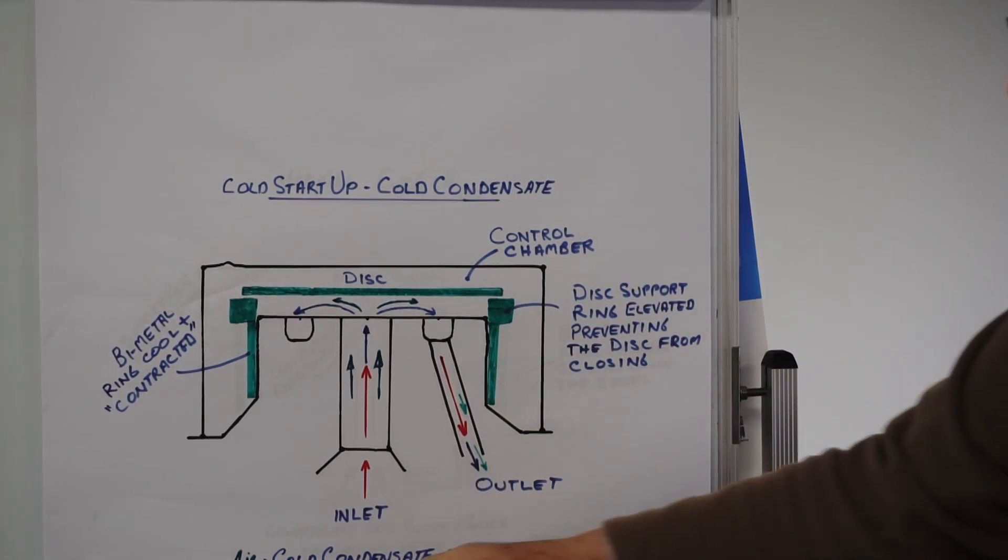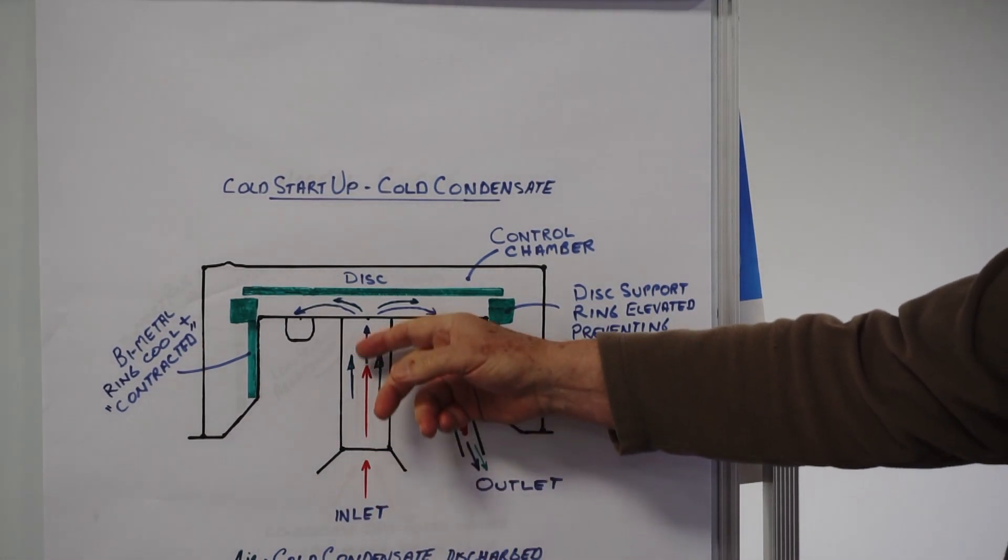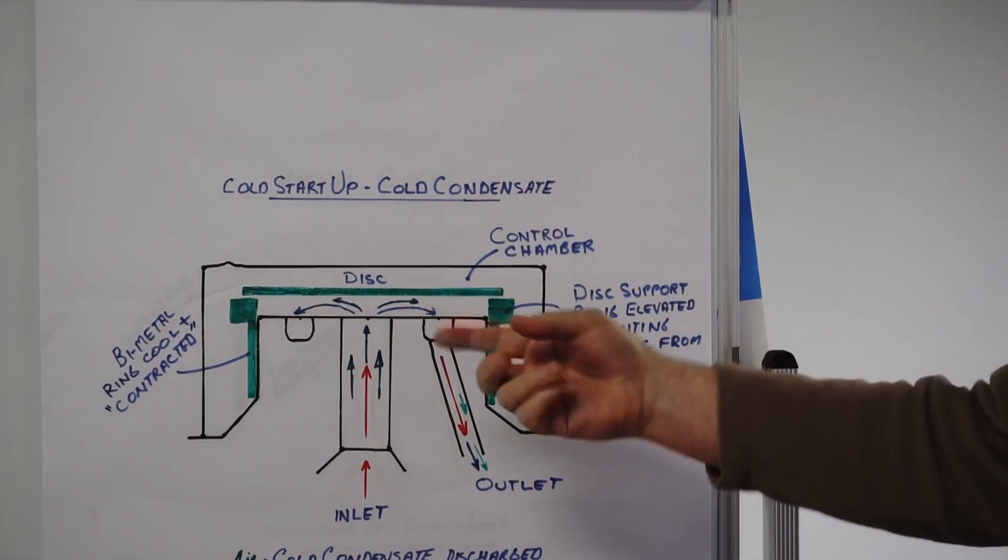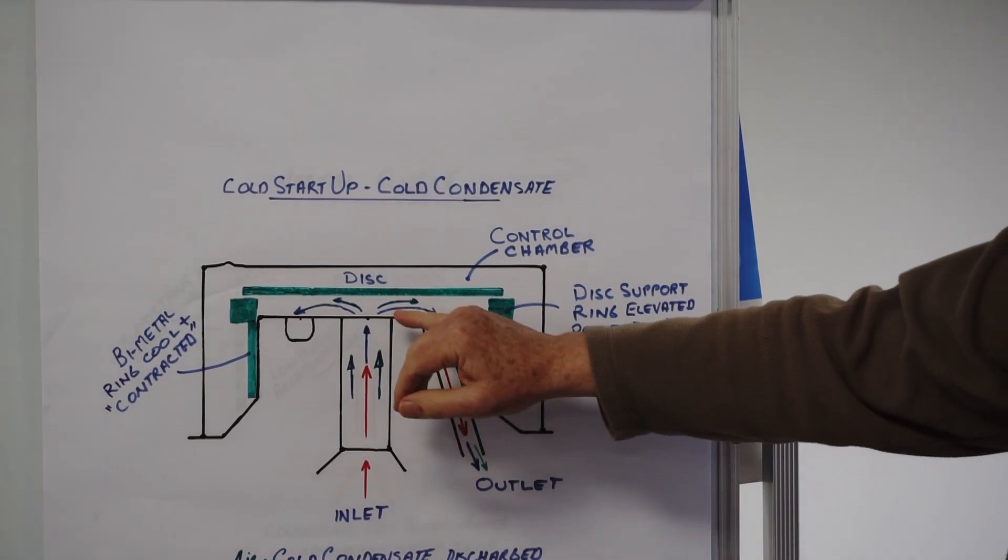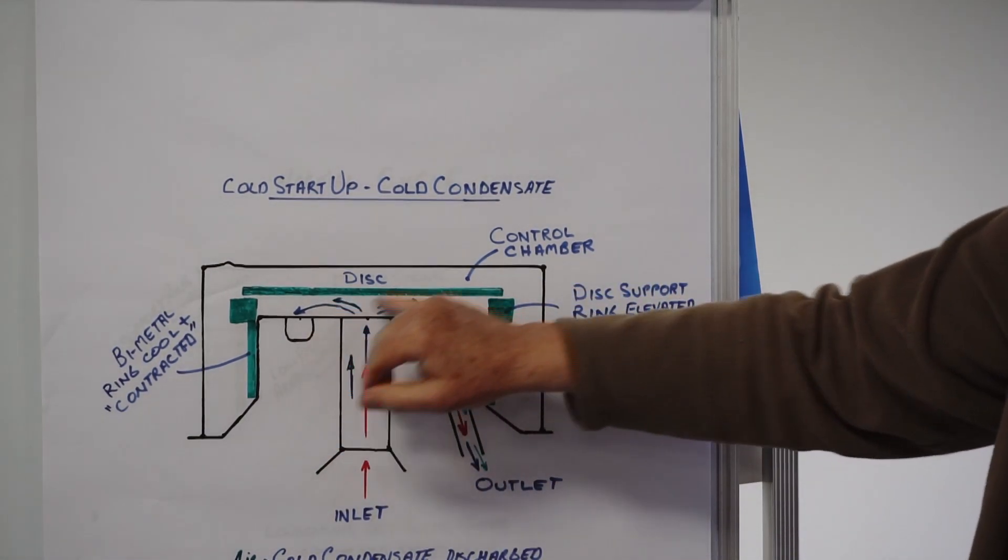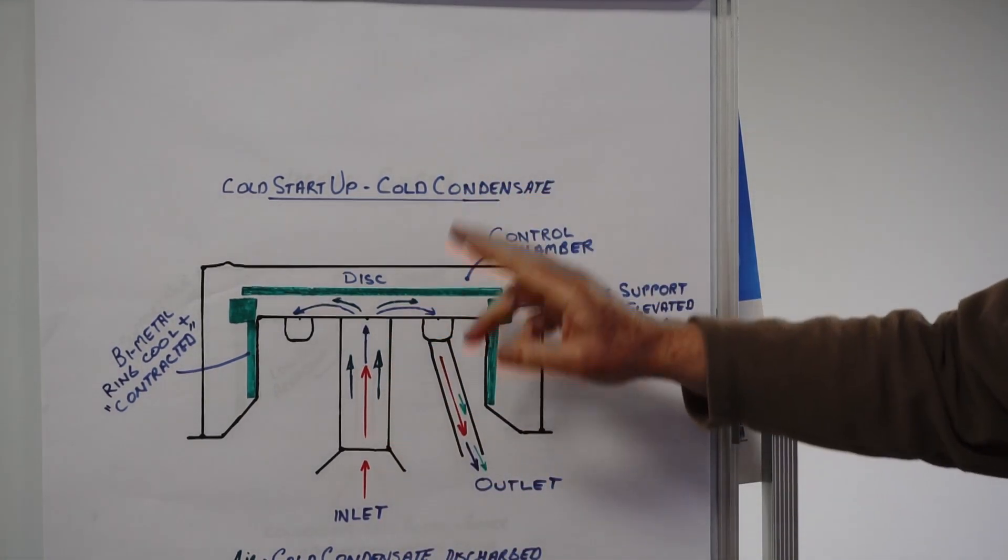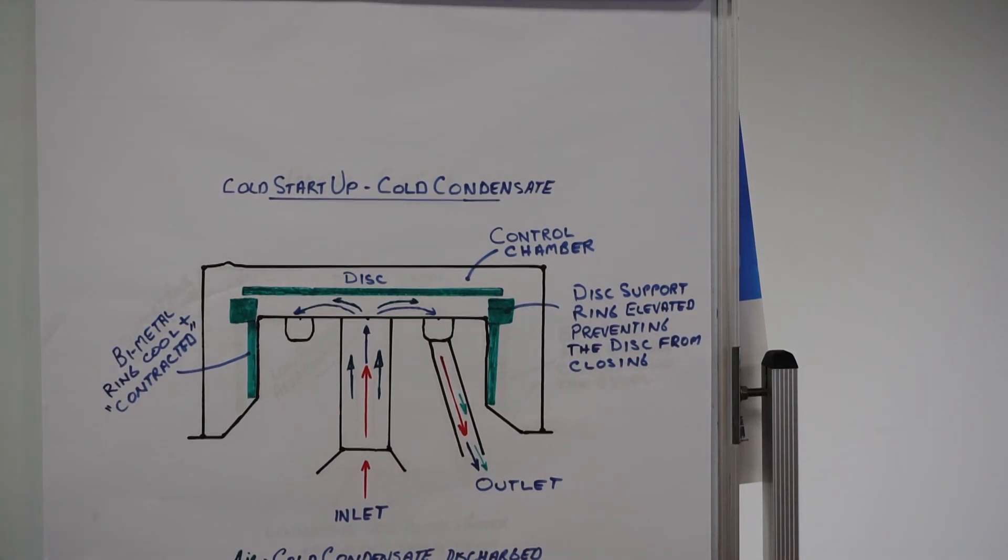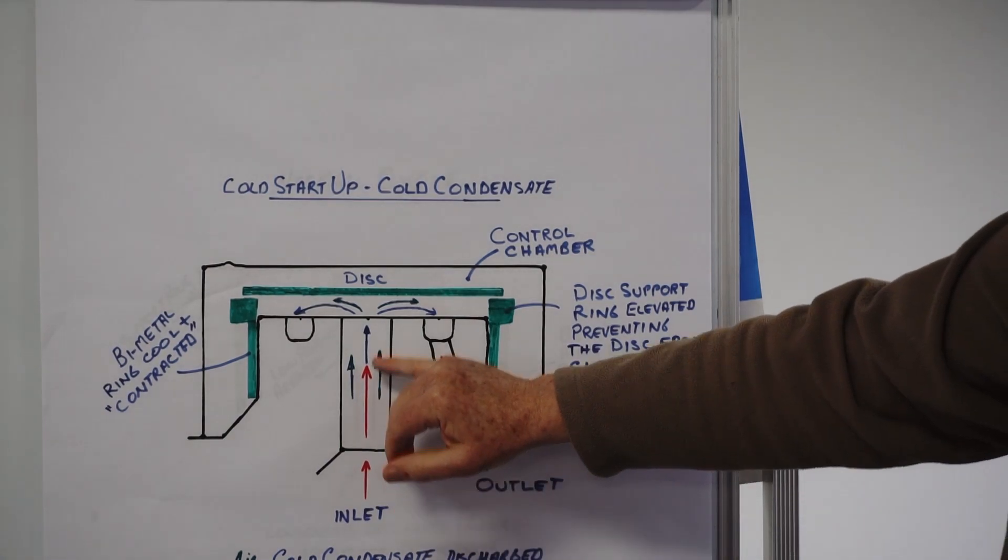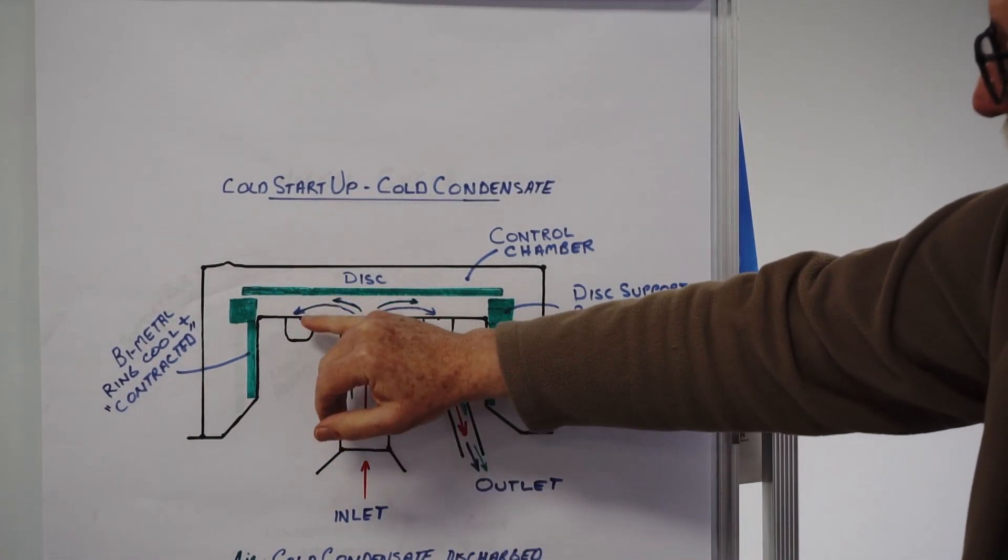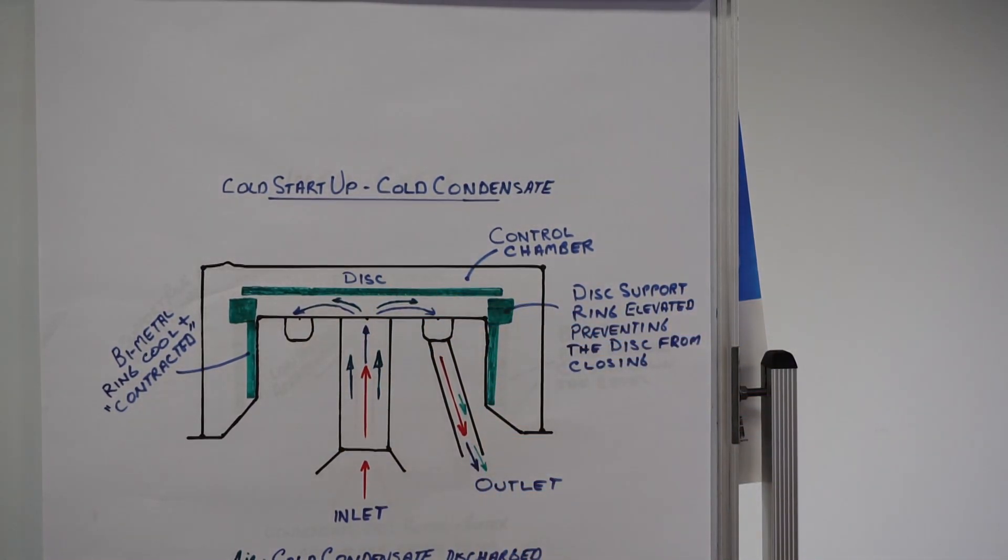When in the cool position, the bimetal ring is contracted very tightly around the body of the trap. When it's tight, it moves up this beveled edge here and lifts this ring up, which then lifts the disc up. So while it's cooling on start-up and you've got cool condensate going in here, all the cool condensate is forced out through the groove and then out through the outlet tube. Any air and other non-condensables will also be forced out through the outlet.